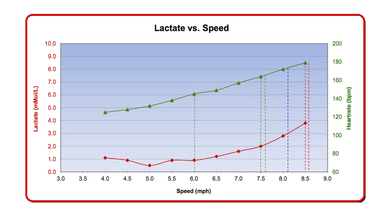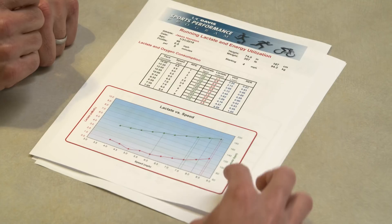The first bit of data we're looking at is lactate versus speed. You had a pretty traditional lactate curve — it was flat at the beginning just like it's supposed to be. It had an initial rise, which gives us a really good read on where you're just starting to generate a little extra lactate and your muscle is not quite able to keep up with production. It's a very good marker for your baseline aerobic zone.